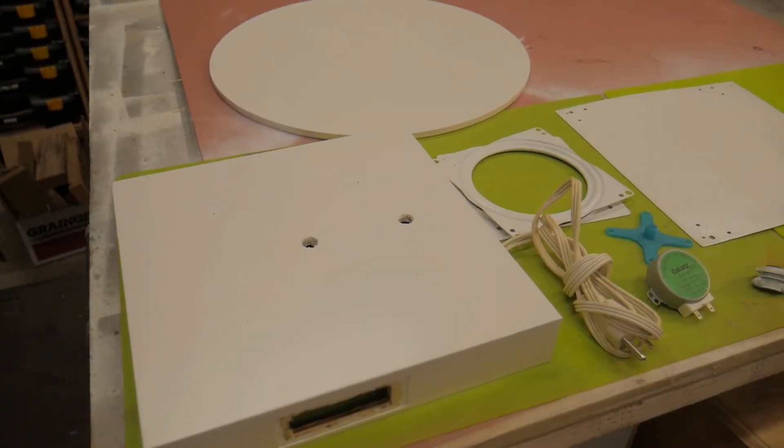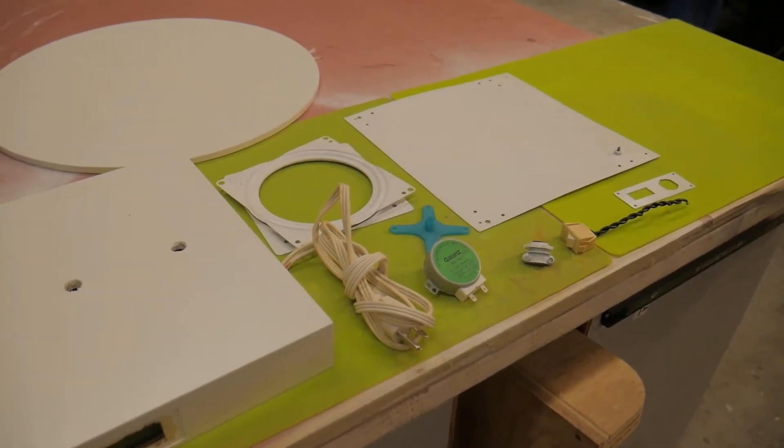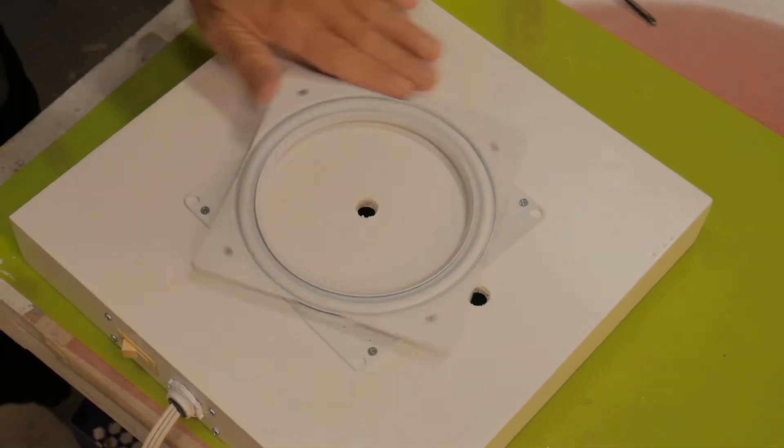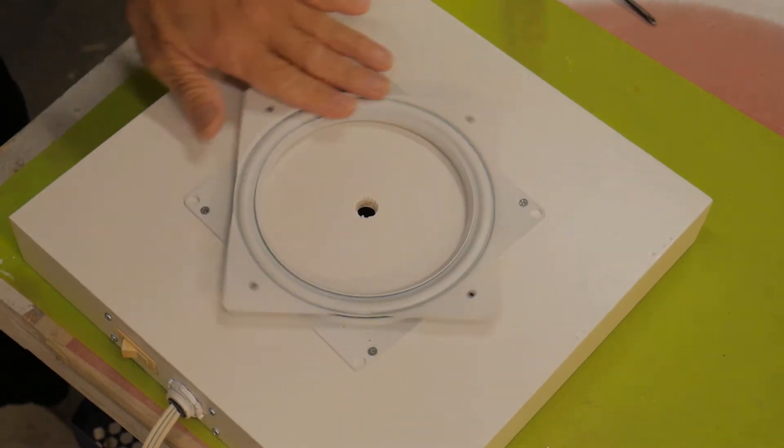So this is all the parts for the final assembly. So when you attach the lazy susan you have to drill an access hole so that you could screw on the opposite side of the lazy susan.